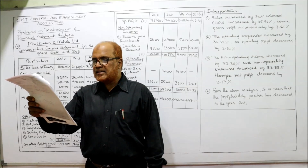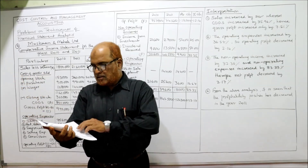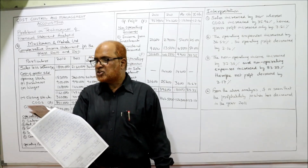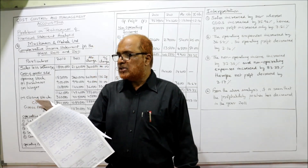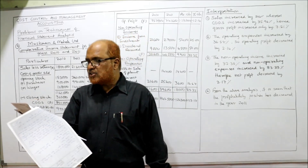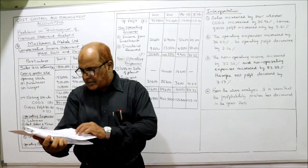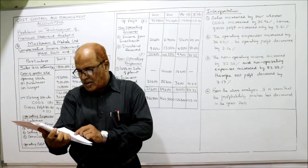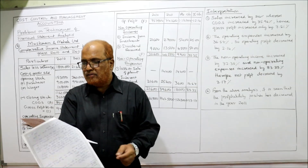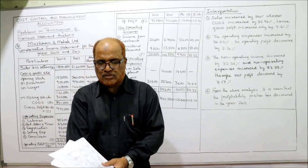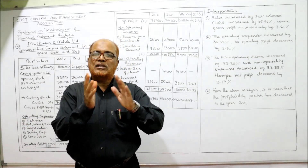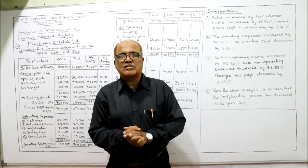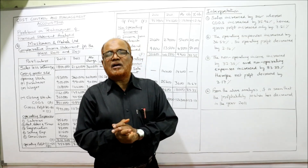The debit side also includes salaries, rent and taxes, depreciation, selling expense, commission, loss on sale of plant, interest paid, and net profit. The credit side includes sales less returns, closing stock, income from investment, and dividend receipt. These are all the items on the debit and credit sides of the profit and loss account. We now have to convert this into a comparative income statement format.